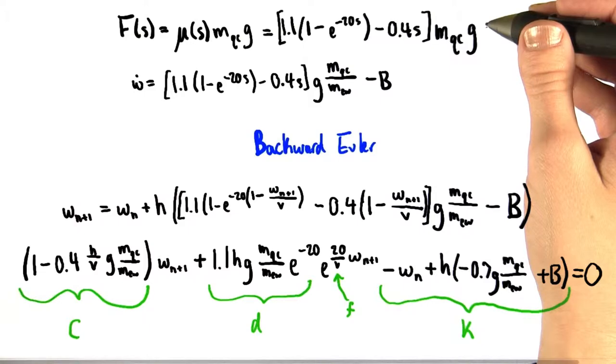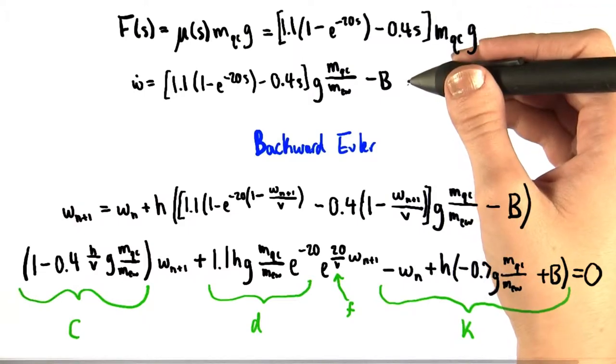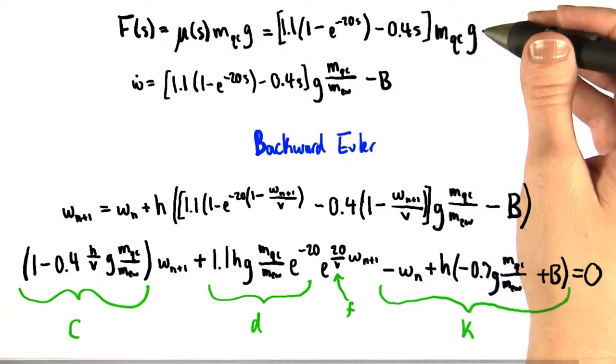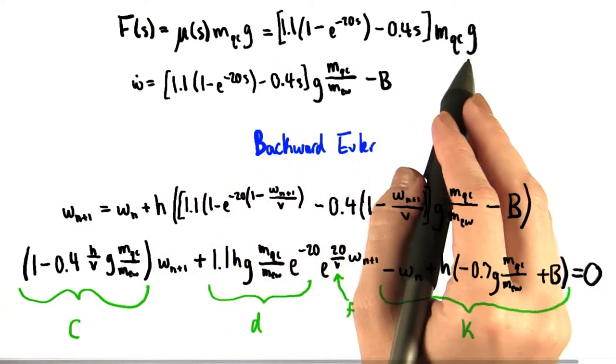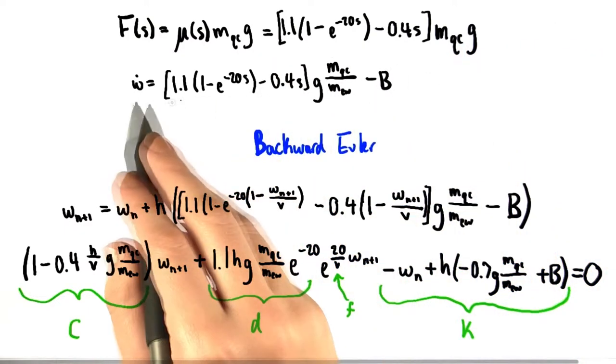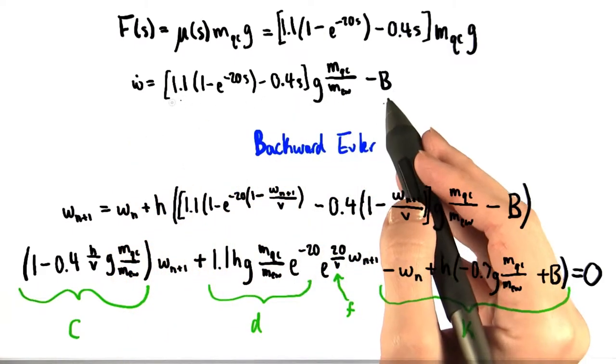Beginning with our equation for the force of friction, we know that the acceleration of the wheel depends on the force of friction divided by the mass of the wheel. So we plug in this expanded version of the equation for the force of friction into the equation for w dot, and of course subtract b.